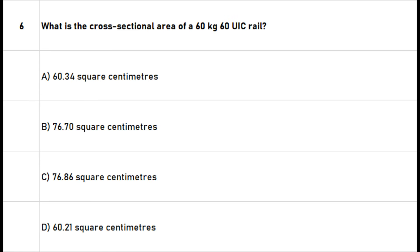Question 6: What is the cross-sectional area of a 60 kg 60 UIC rail? A. 60.34 square centimeters. B. 76.70 square centimeters. C. 76.86 square centimeters. D. 60.21 square centimeters. The right answer is option C: 76.86 square centimeters.